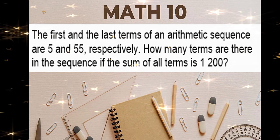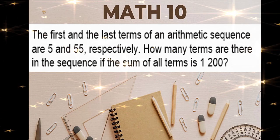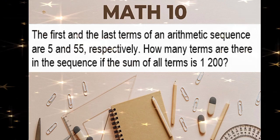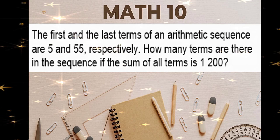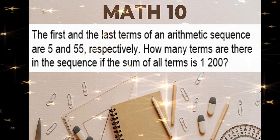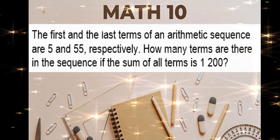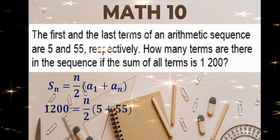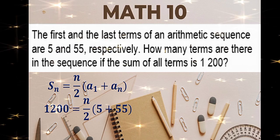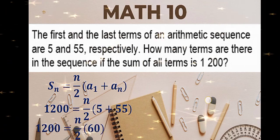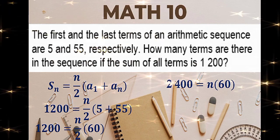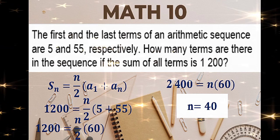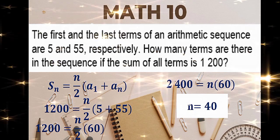The first and the last term of an arithmetic sequence are 5 and 55 respectively. How many terms are there in the sequence if the sum of all terms is 1,200? Given is the sum of all terms which is 1,200, the first term which is 5, and the last term which is 55. Using the formula and substitution: the sum of the series is 1,200, equals n divided by 2, times first term 5 plus last term 55. Add, then multiply both sides by 2 to eliminate the fraction, then divide by 60. Therefore, n is 40. There are 40 terms in the sequence.